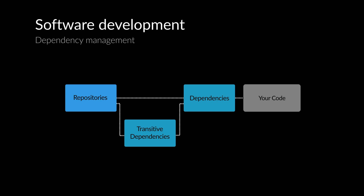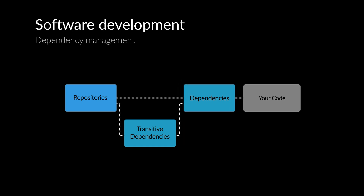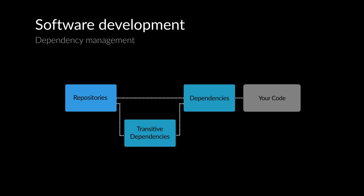These days, build tools automate much of this. You specify what direct dependencies you need and what versions are acceptable in your build configuration, and the build tool figures out the transitive dependencies and versions needed and automatically downloads all of them.